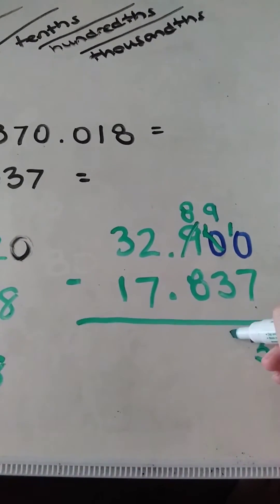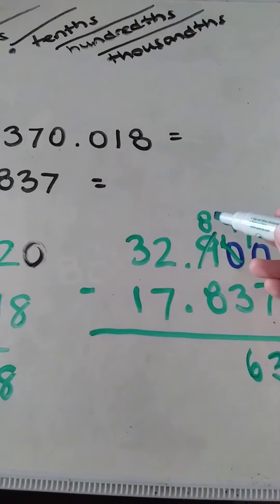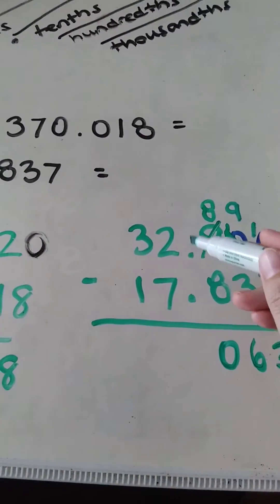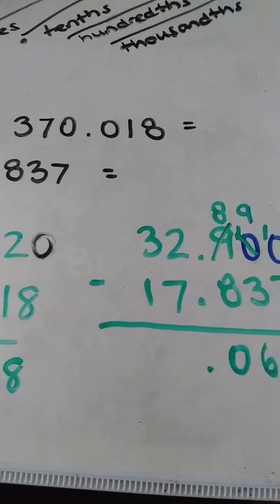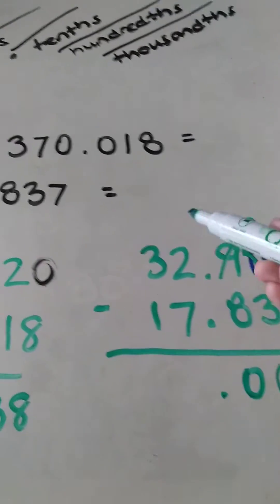Eight minus eight is zero. There's my decimal - I gotta remember to bring it down. Two minus seven, oh I can't do that.